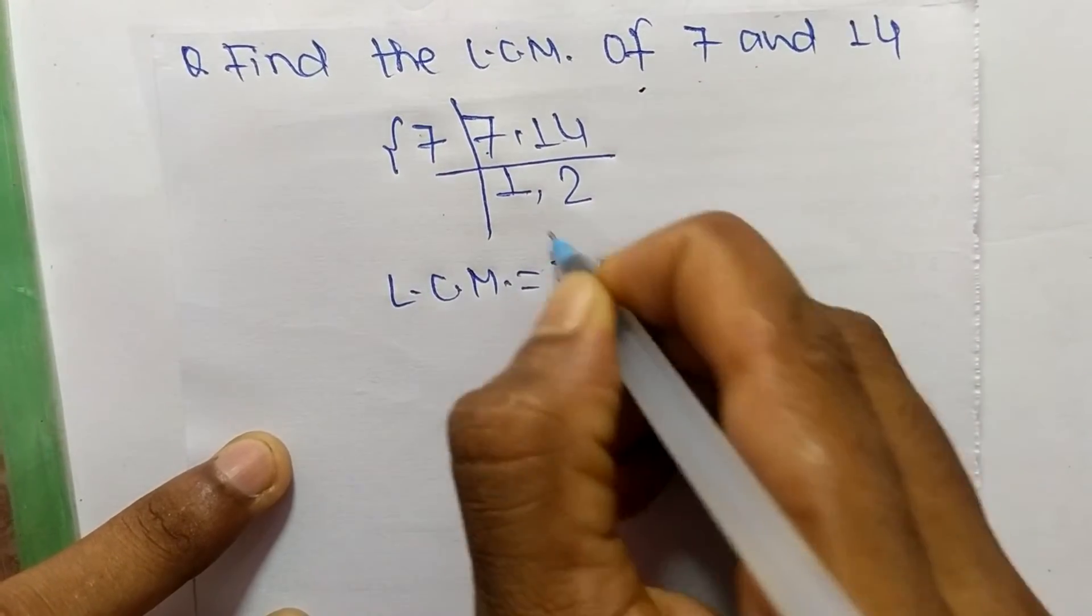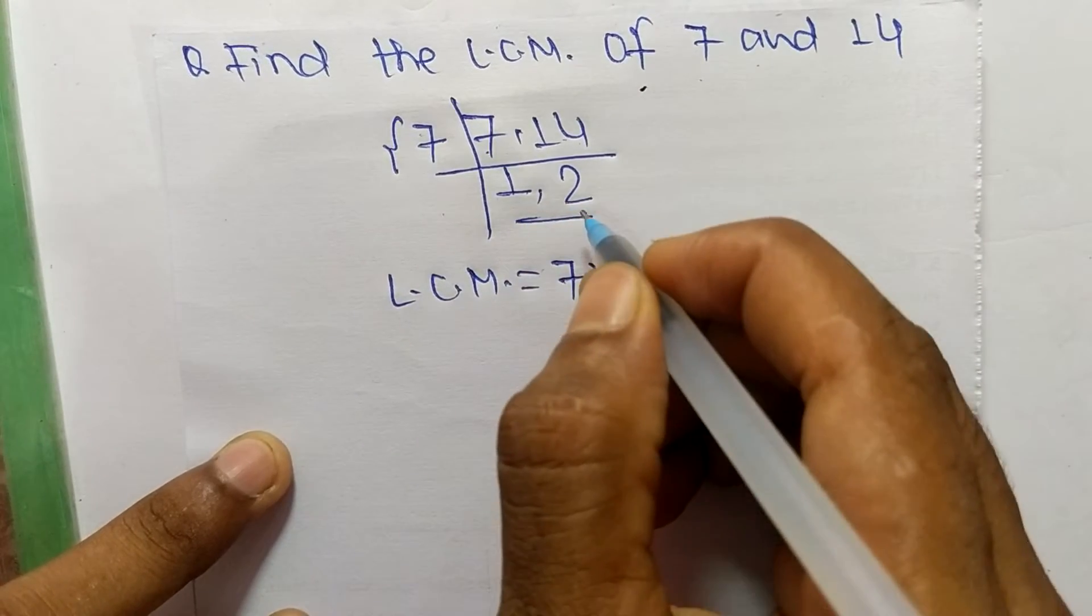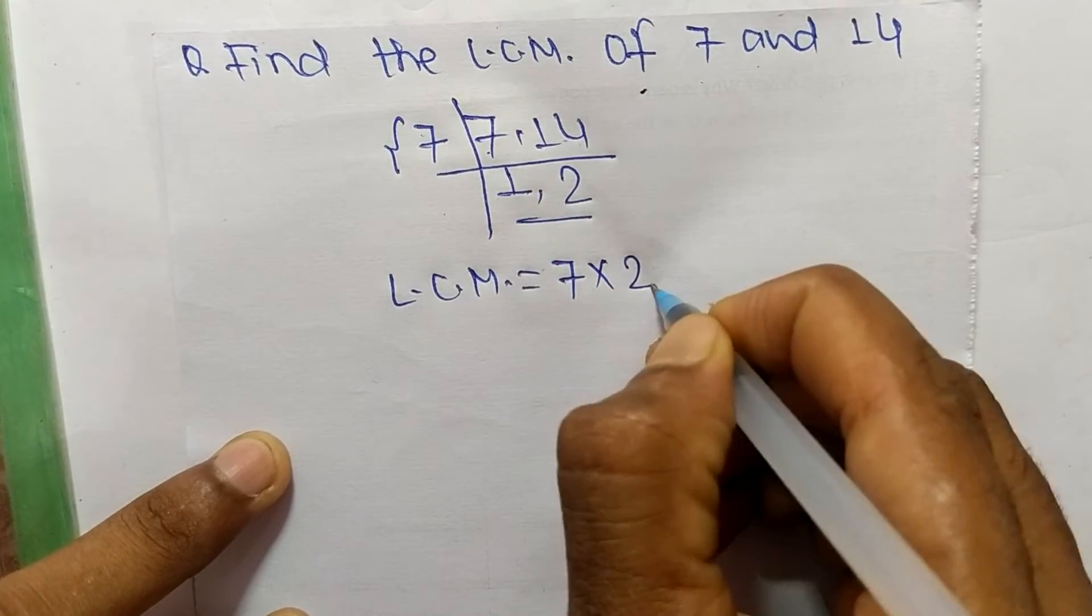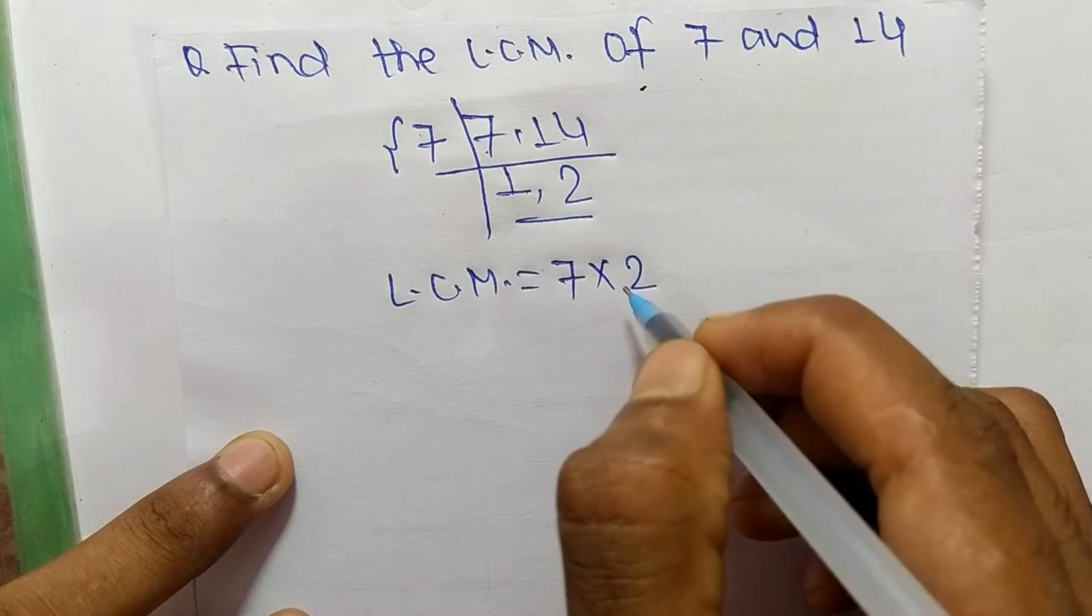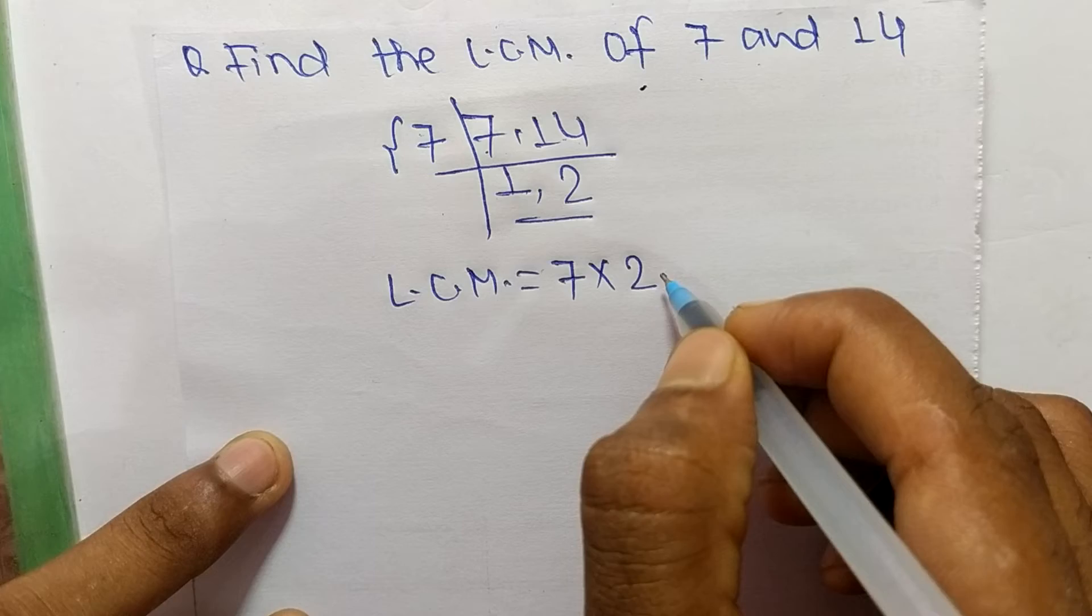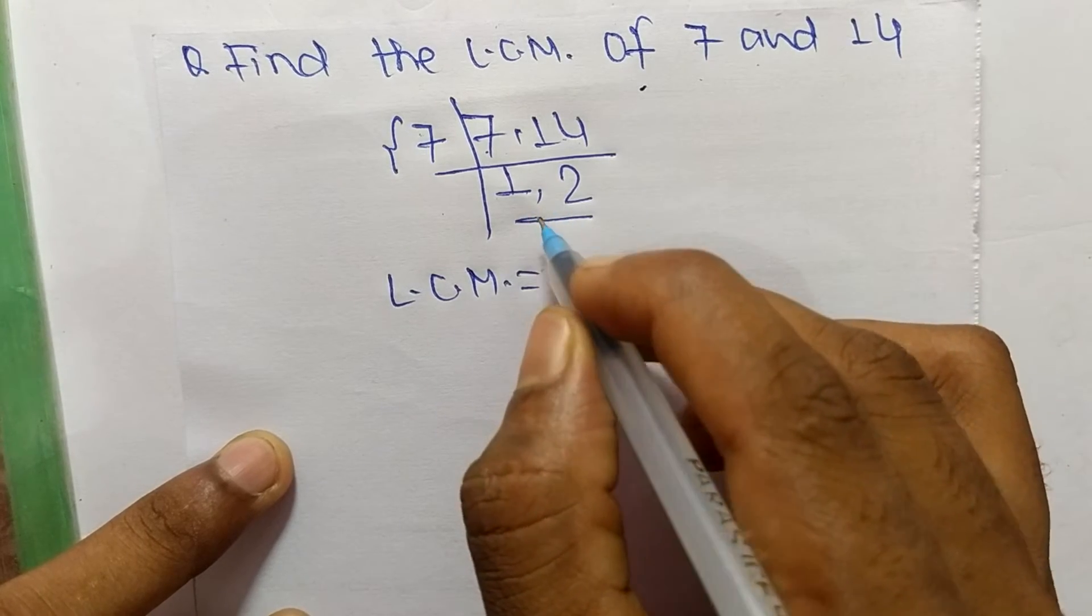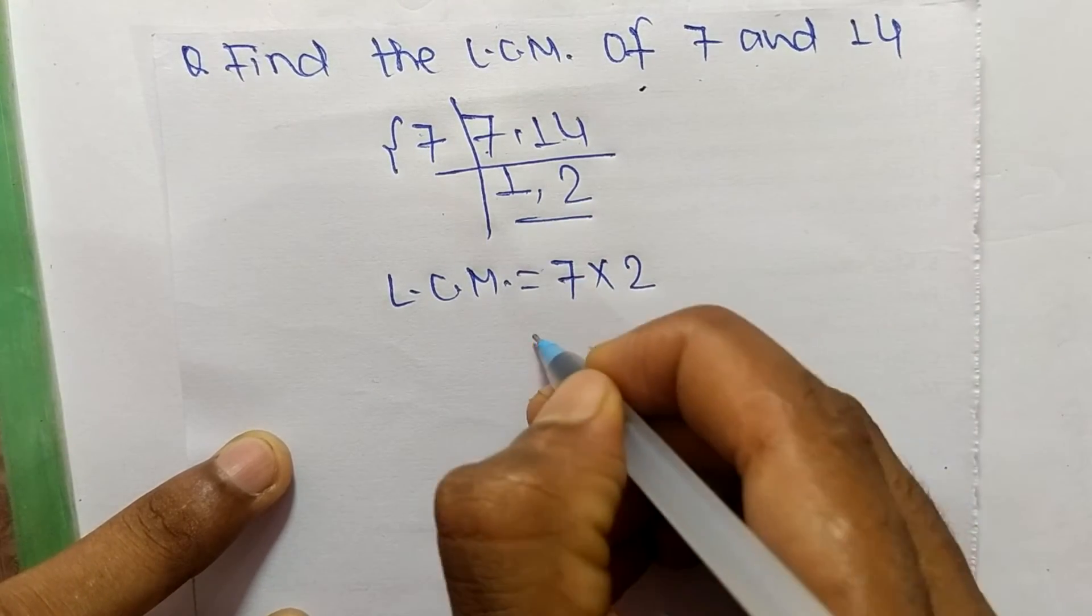And from here we have 1 and 2, but we take here only 2 and we neglect 1. Because by multiplying any number with 1 we get the same result, so we don't take here 1.